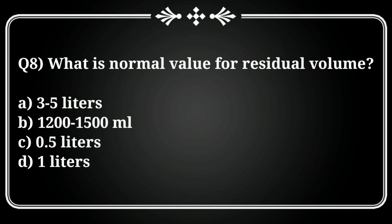Question 8: What is the normal value of residual volume? First, you should know what residual volume is — it is the volume of air which remains in the lungs after forceful expiration following normal inspiration. The correct answer is option D, 1 liter. The normal residual volume is 1 liter.